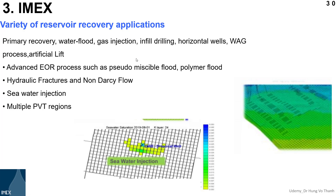In the beginning of this course, I talked about the IMS application, but I would like to remind you here. IMS can apply for the primary recovery beyond the natural depletion of your reservoir mechanism. Also, IMS can apply in the secondary recovery such as water flooding or gas injection. Or even you would like to make in-field drilling to see the effects of in-field drilling to enhance or improve overall recovery. Of course, you can do it in IMS software.